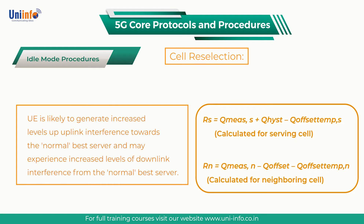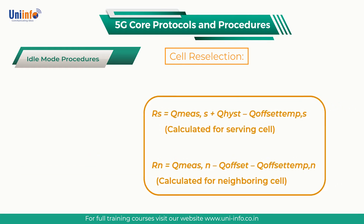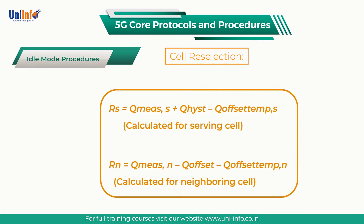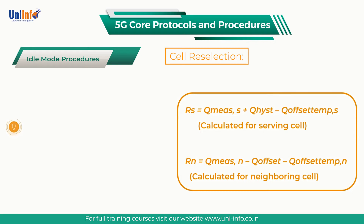In this case, the UE is likely to generate increased levels of uplink interference towards the normal best server and may experience increased levels of downlink interference from the normal best server. Q-Offset Temp S is defined by the value of Connection Establishment Failure Offset within the Connection Establishment Failure Control section of SIB1. The temporary offset is applied if the UE experiences repetitive connection setup failures caused by T300 expiring, i.e., the UE does not receive an RRC setup nor RRC reject message after sending an RRC setup request.